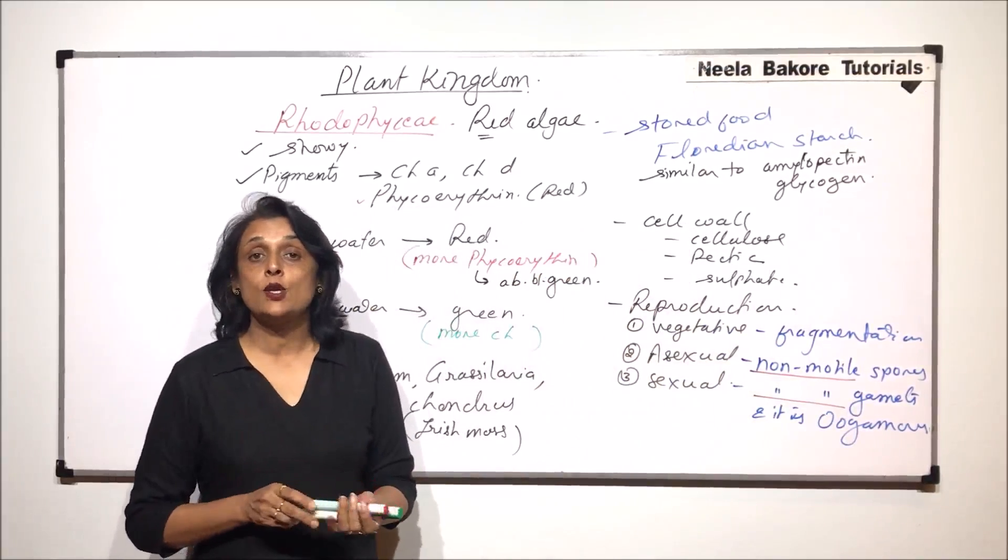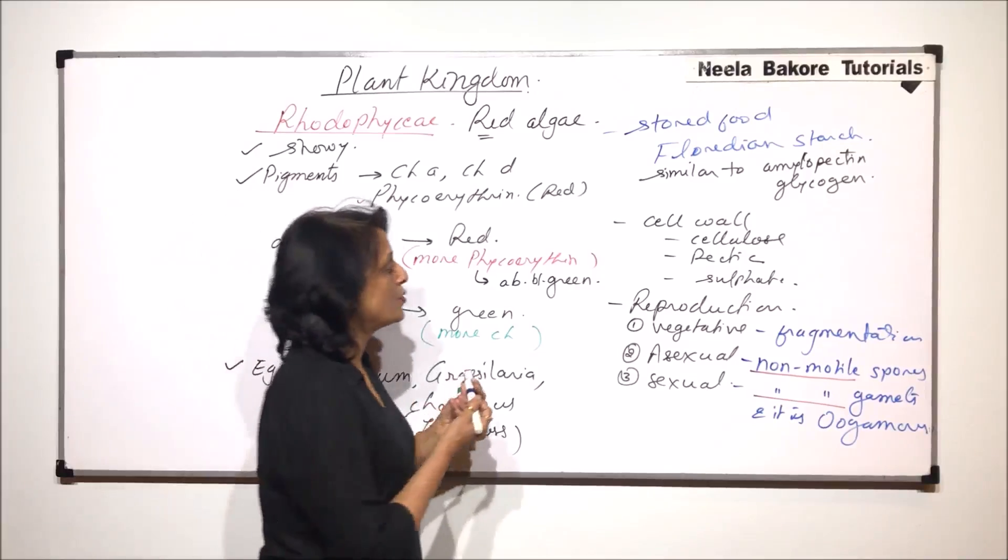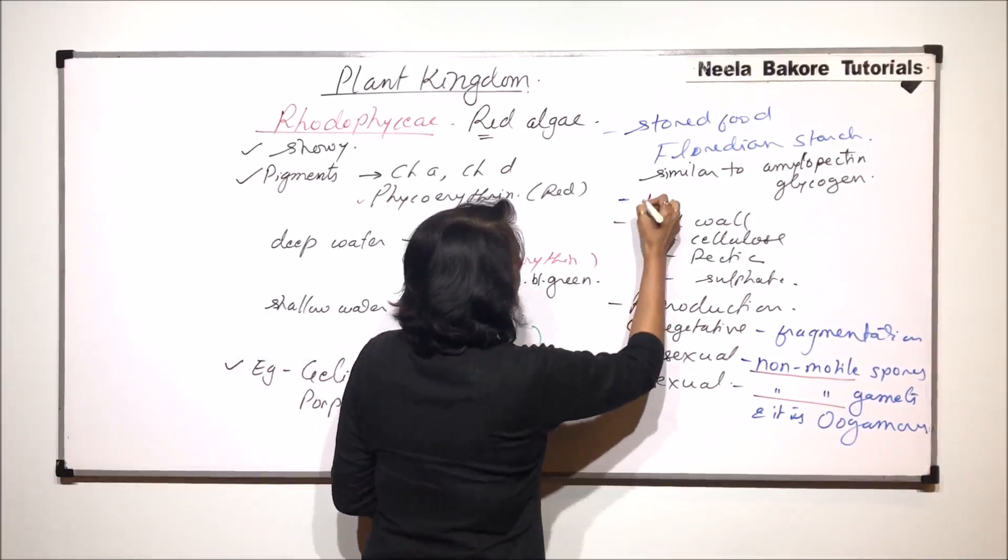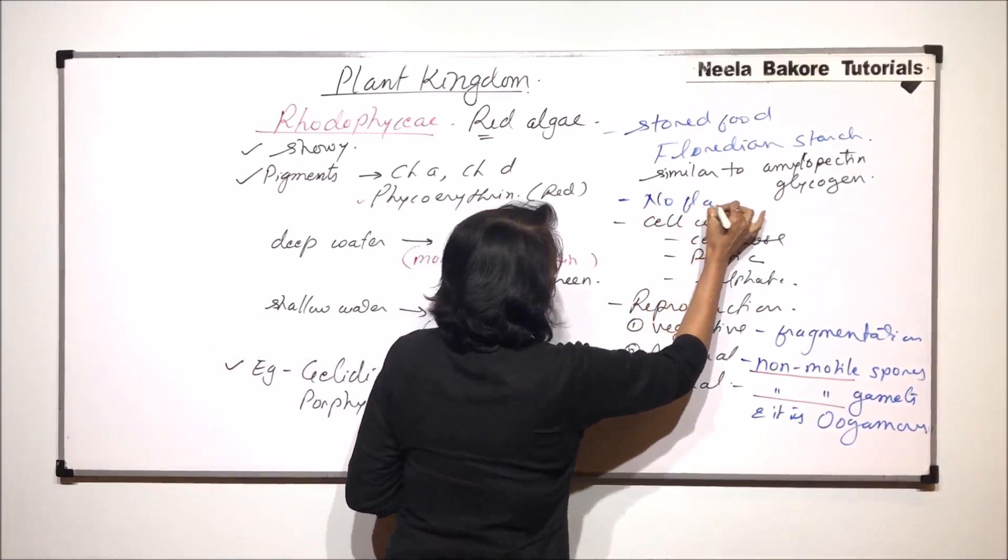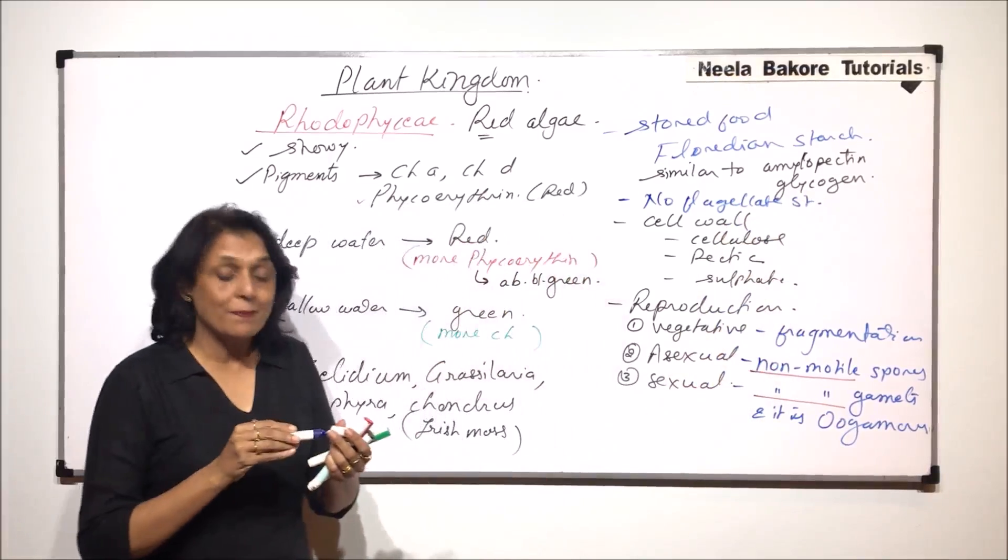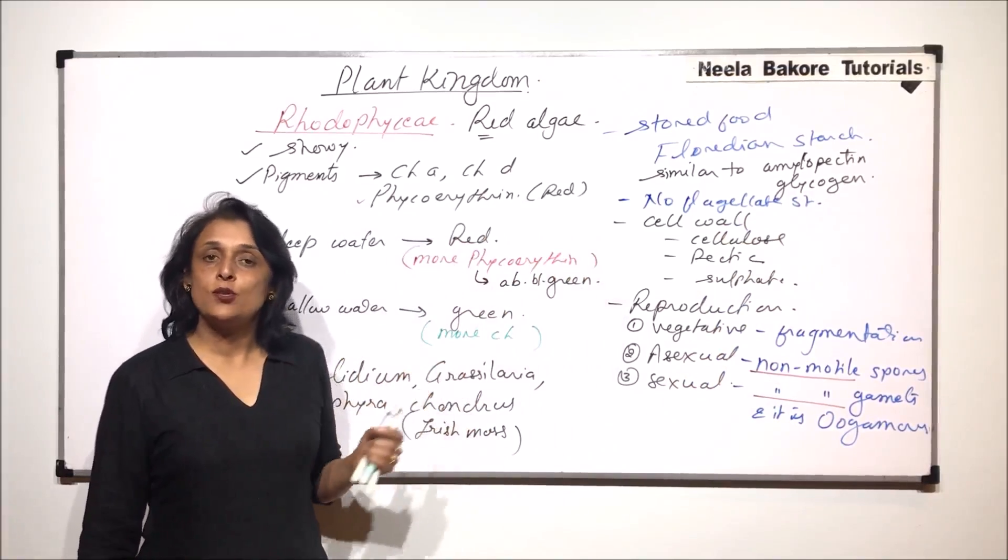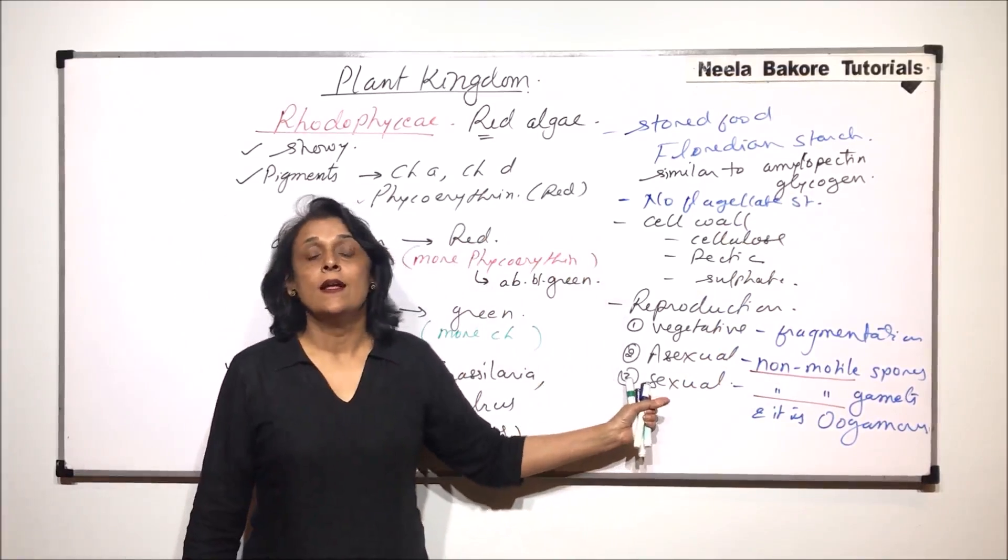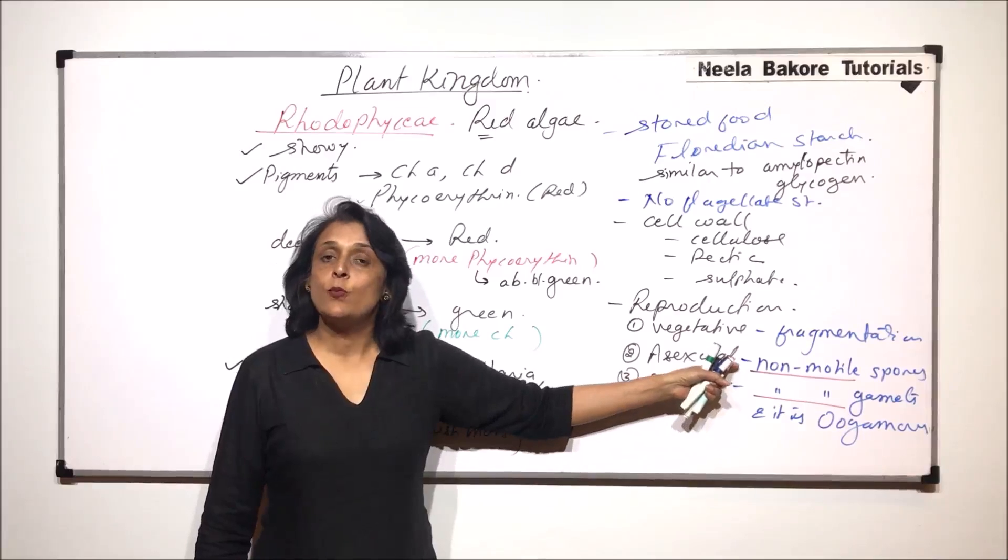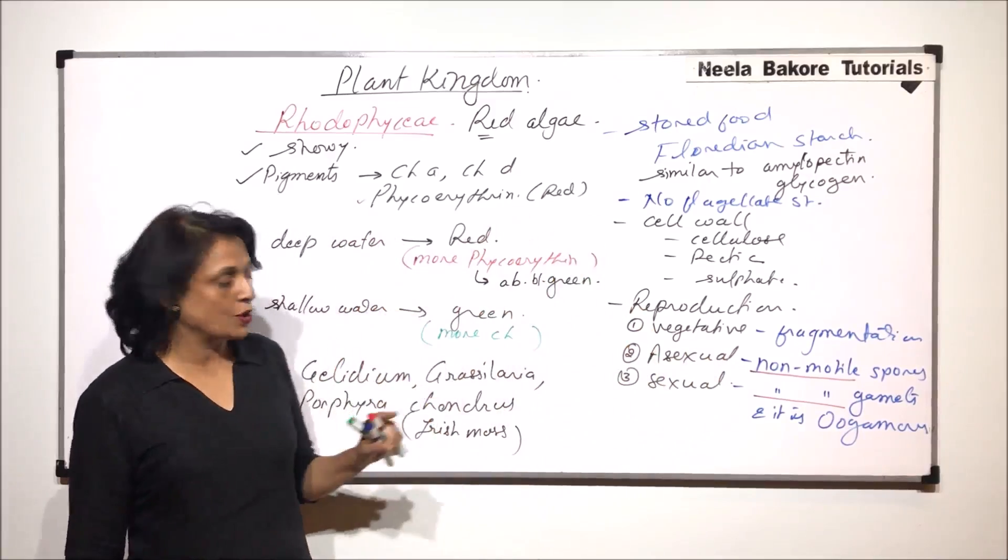That means in case of red algae, there are no flagellate structures. We can write this here that there are no flagellate structures. Normally, the spores or the male gametes, they have flagella for moving from one place to another. But in this case, the gametes as well as the spores which are produced, they are non-motile. So there are no flagellate structures which are present.